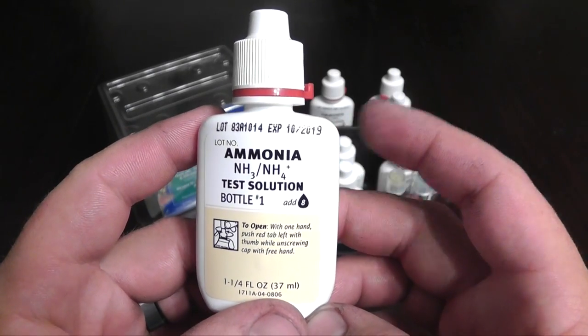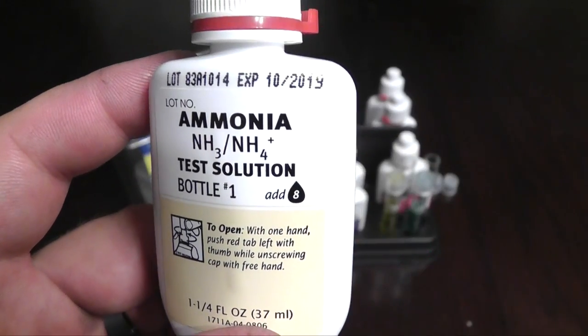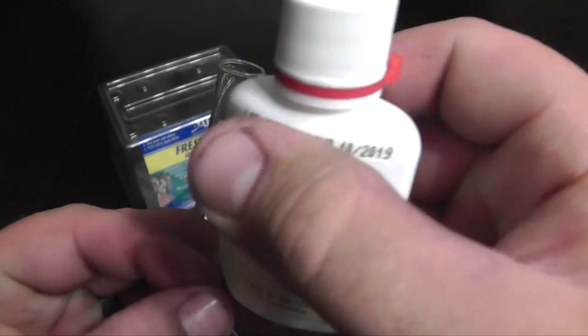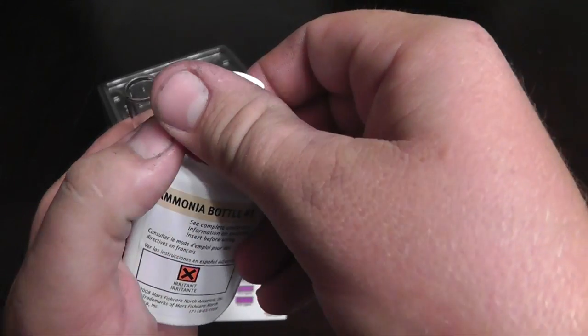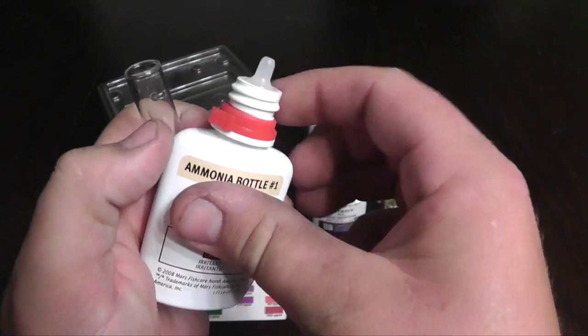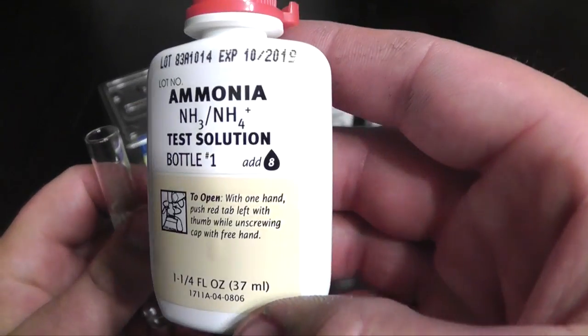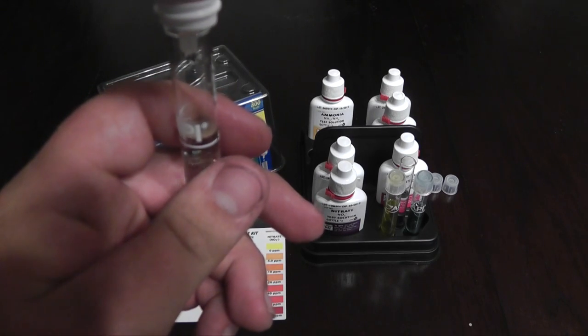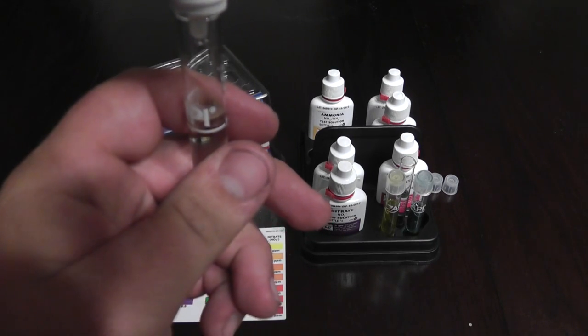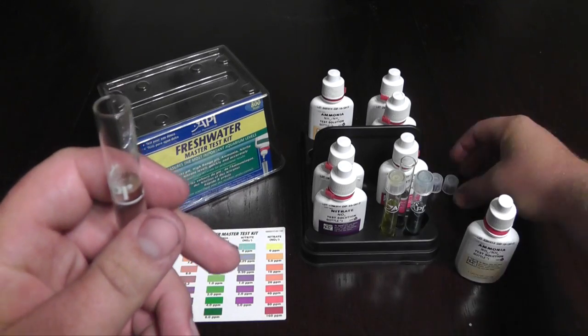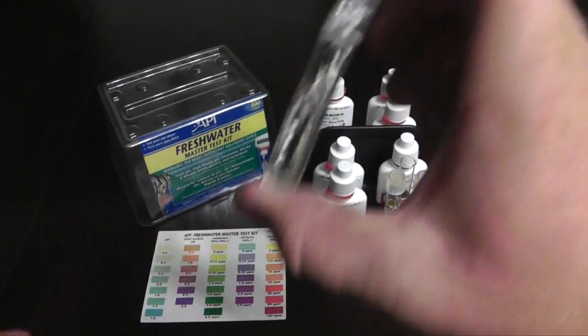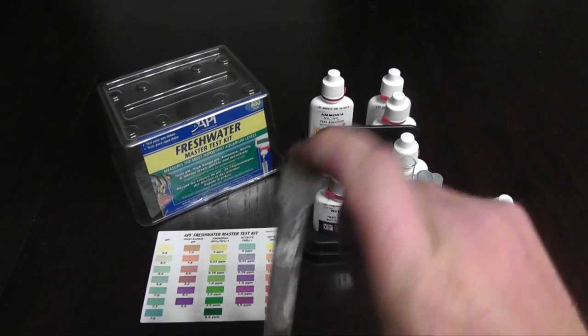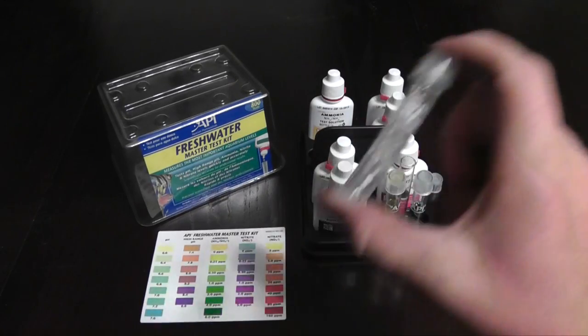Next, you want to add eight drops to your ammonia test tube. So let's go ahead and do that. Like I said, eight drops. You can see right there. And then you shake it up. Because this one has two bottles, sorry. Two bottles that you test with. Shake this one up a little bit. And then you can grab your second bottle.